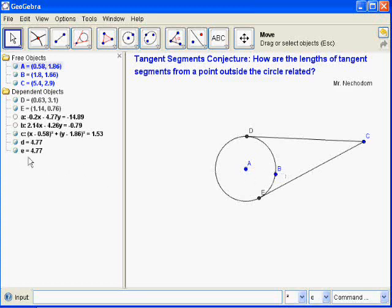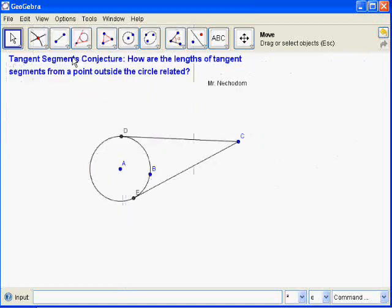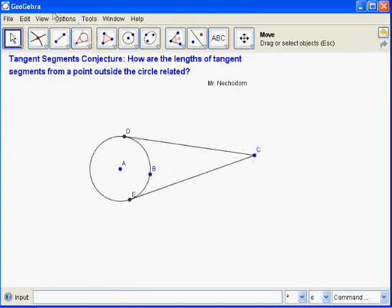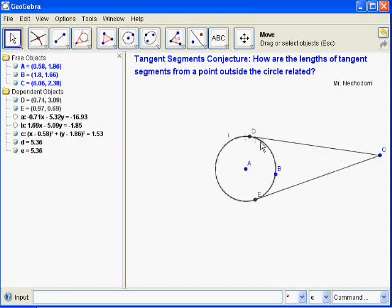One way to find out is look over here in the measurements and you can see that they're equal length. But I want the demonstration to actually show it. So in case I decide to hide the algebra view so it looks nicer, I can still see that they are equal in length. I'm going to bring that algebra view back. I might need it later.